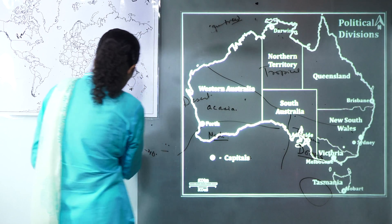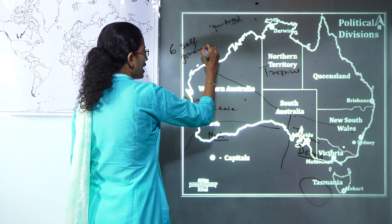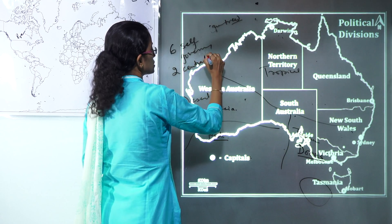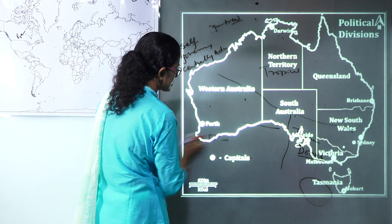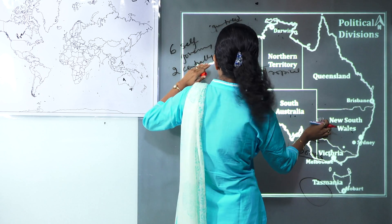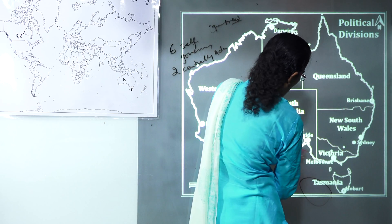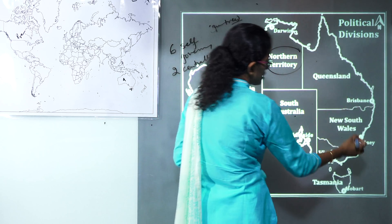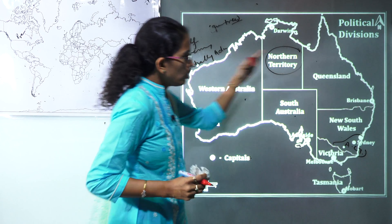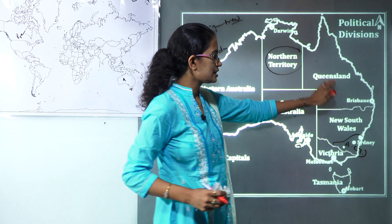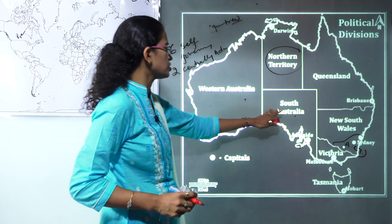Under the political aspects, Australia is divided into six self-governing regions and two centrally administered regions. The two centrally administered regions are the Northern Territory and the Australian Capital Territory. The six self-governing regions are Queensland, New South Wales, Victoria, Tasmania, South Australia, and Western Australia.